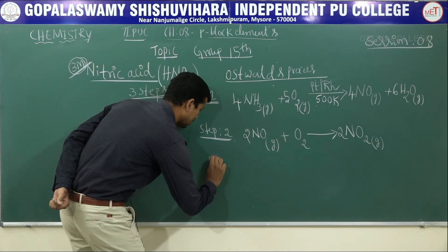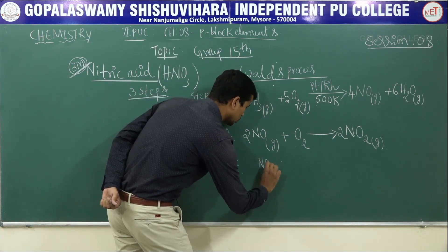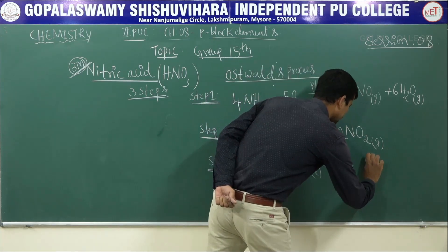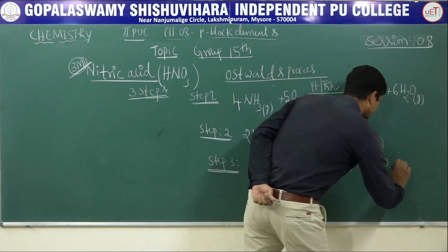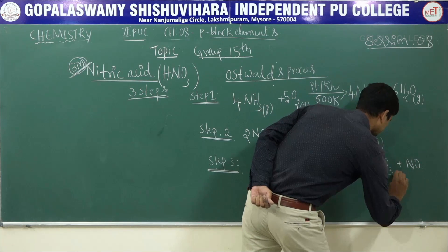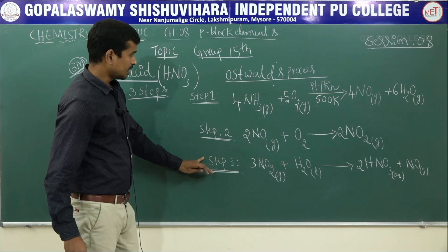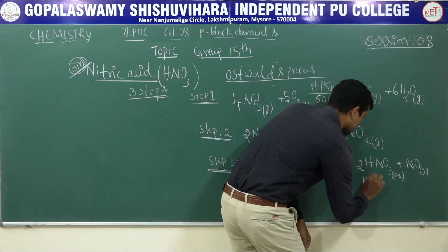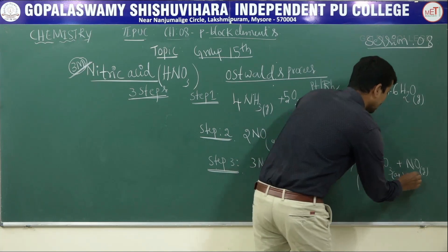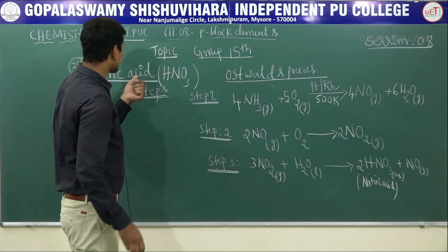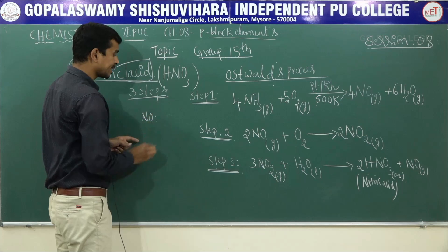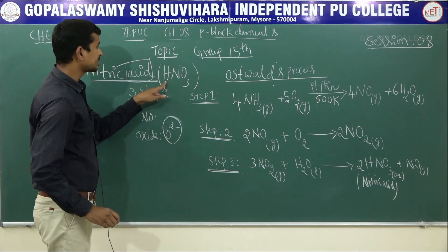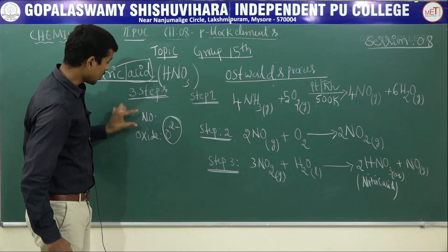In step three, nitrogen dioxide NO2 gas is passed through water to give nitric acid HNO3 and nitric oxide NO. HNO3 is nitric acid — it contains H+ ions — whereas NO is nitric oxide. That is the difference between an acid and an oxide.